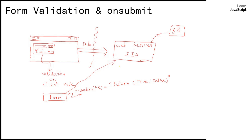From the onsubmit event, if we return true then the data will be submitted to the action file — usually a target on the web server. If we return false, the onsubmit will be cancelled. By using JavaScript we can do this validation, and when returning false we can even raise an alert message.